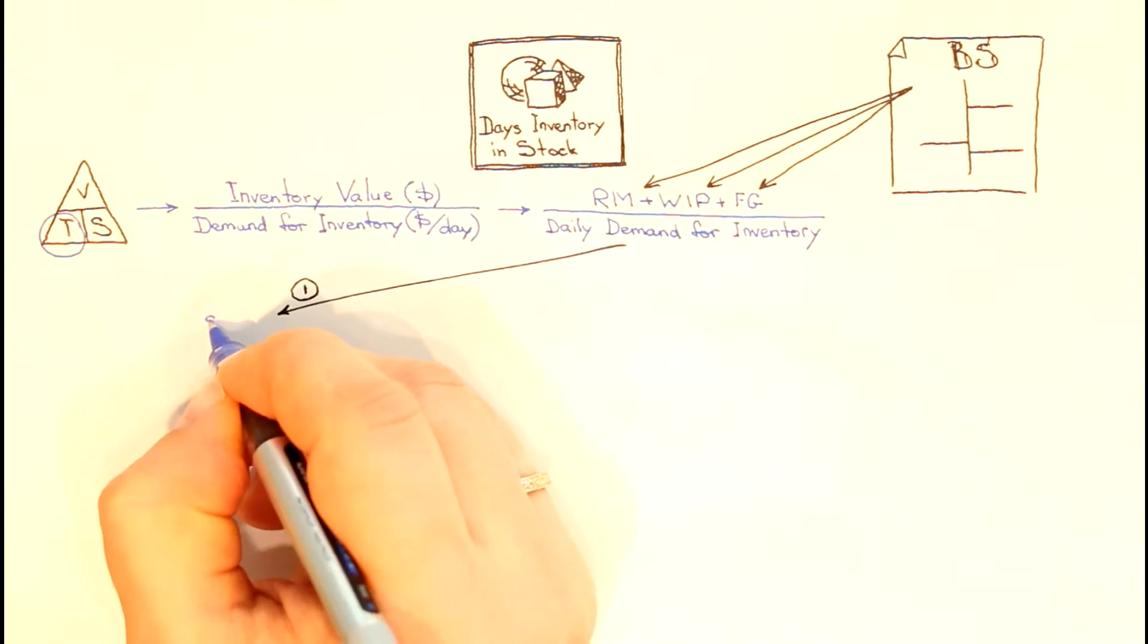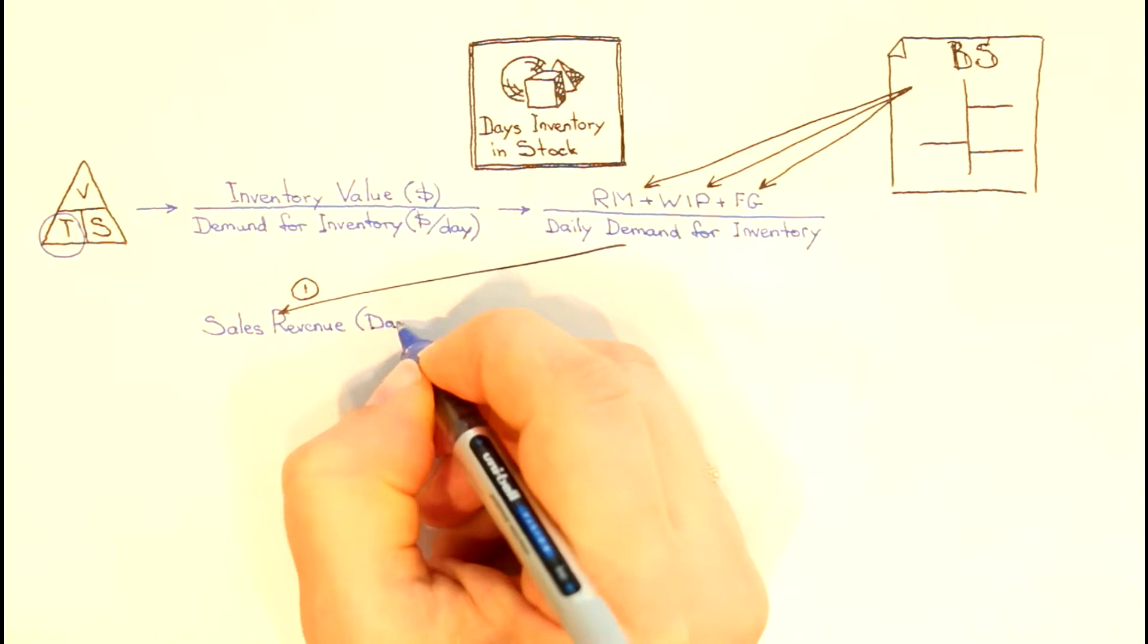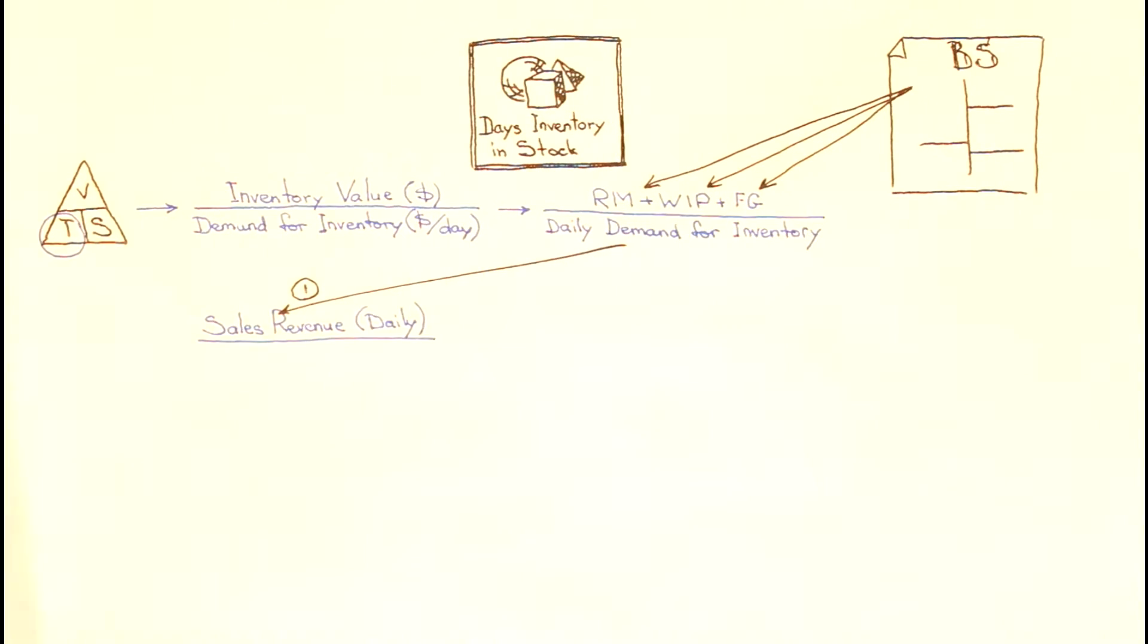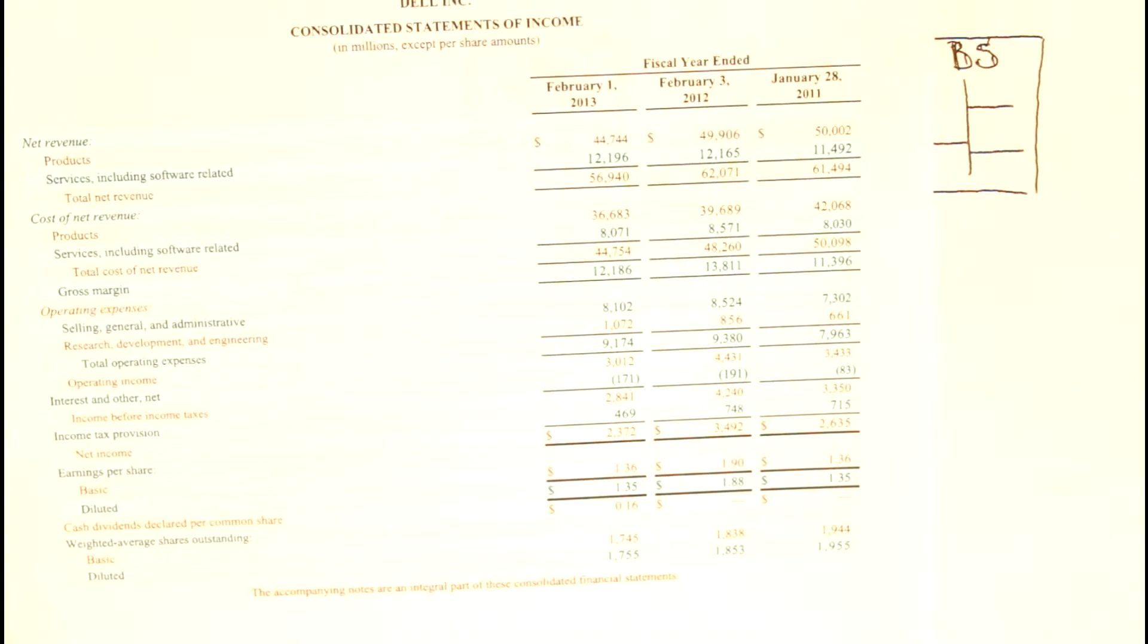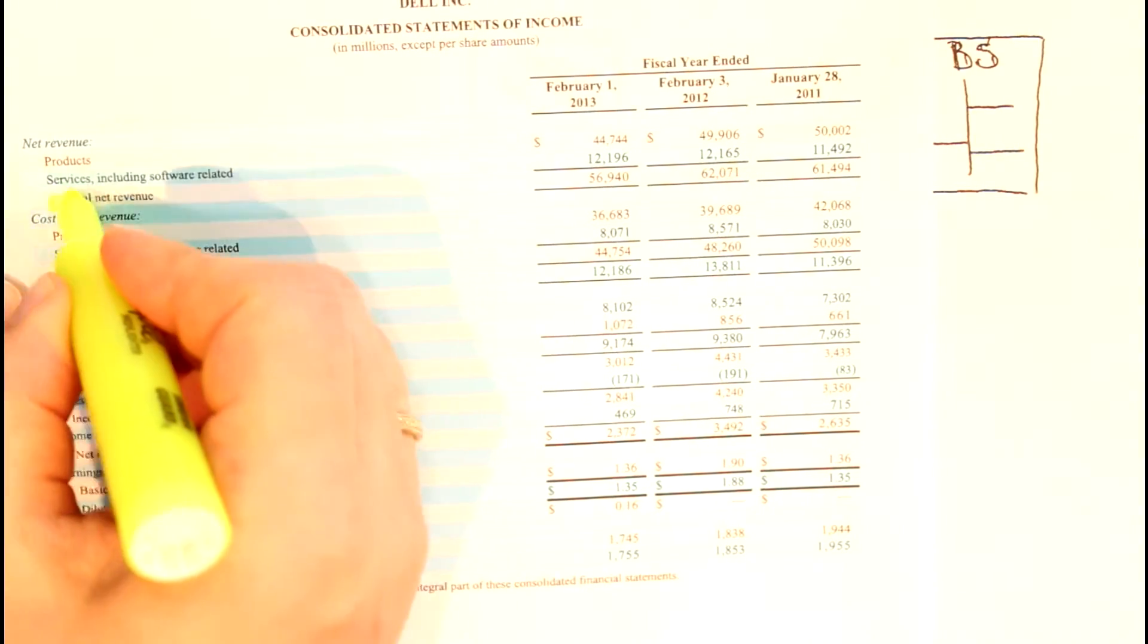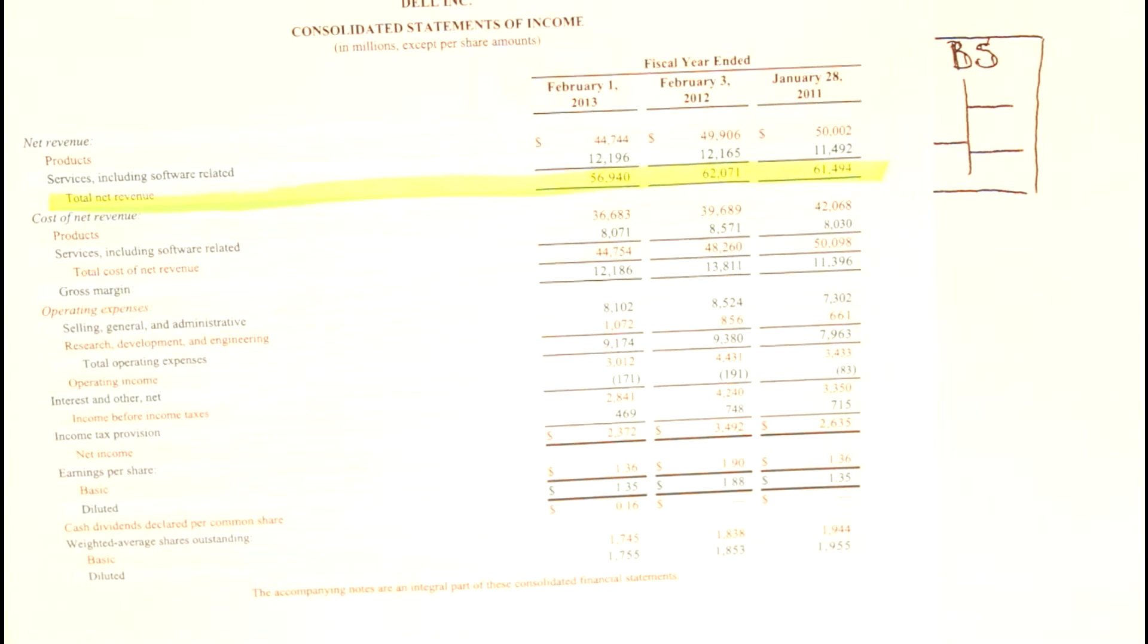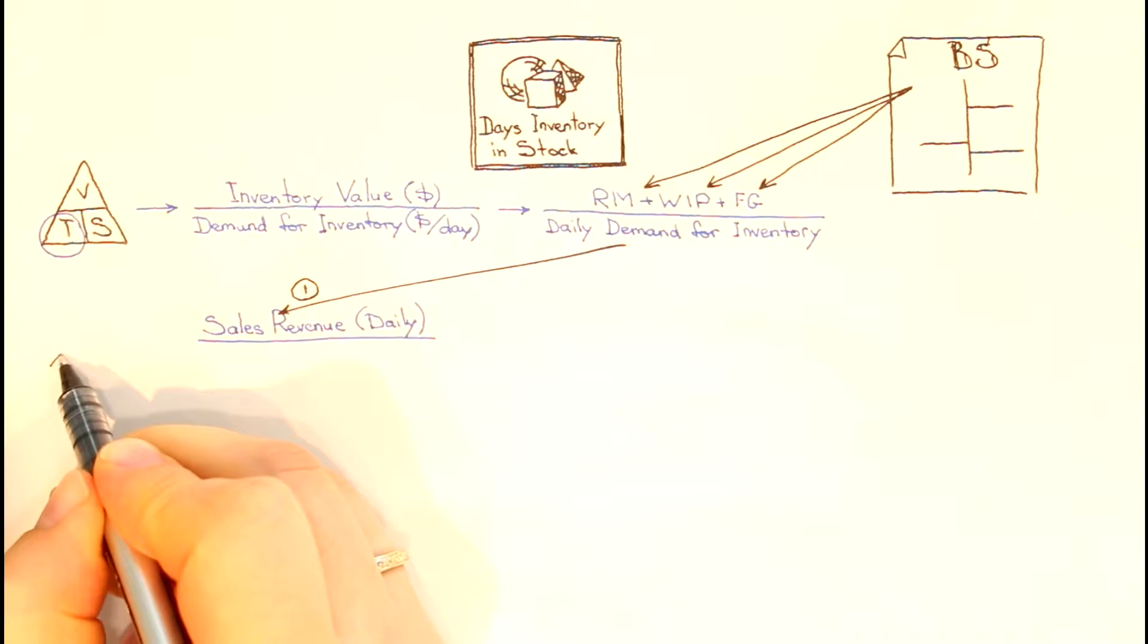Some analysts use daily sales for a daily inventory demand figure. That amount can be easily taken from the sales or revenue line of the income statement of the company. Financials represent that amount for the period, a month, a quarter,